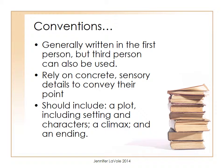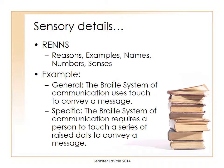There are certain conventions used when writing a narrative. Narratives are generally written in the first person, but third person can also be used. First person means using pronouns like I and me, and third person means using pronouns like he and she. All narratives rely on concrete sensory details to convey their point. And all narratives should include a plot, including setting and characters, a climax or the event that changes your character, and an ending. We can use the mnemonic device RENS to remember that we need reasons, examples, names, numbers, and senses to create those sensory details.